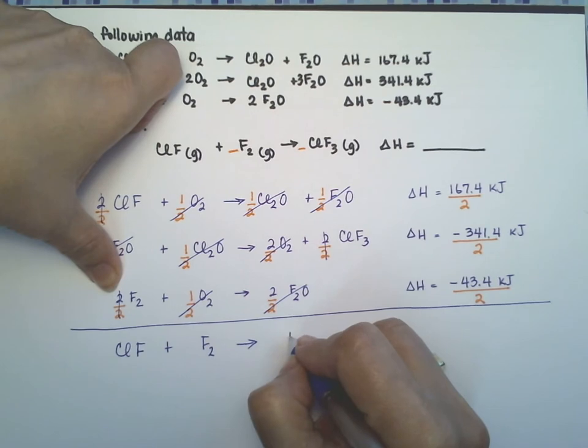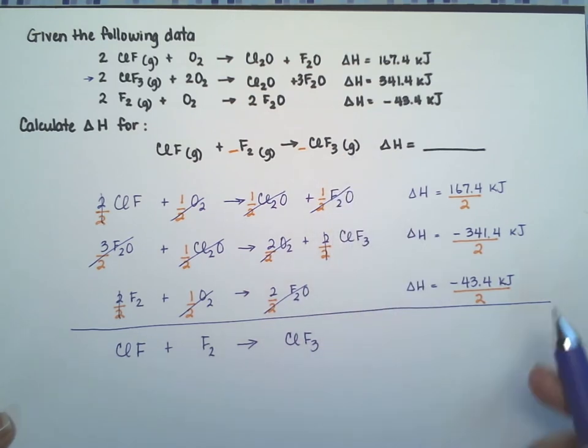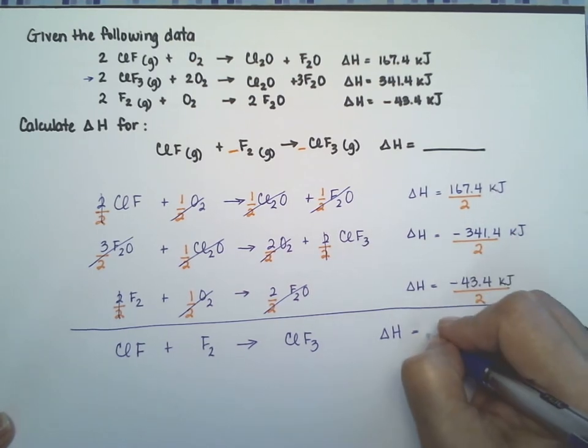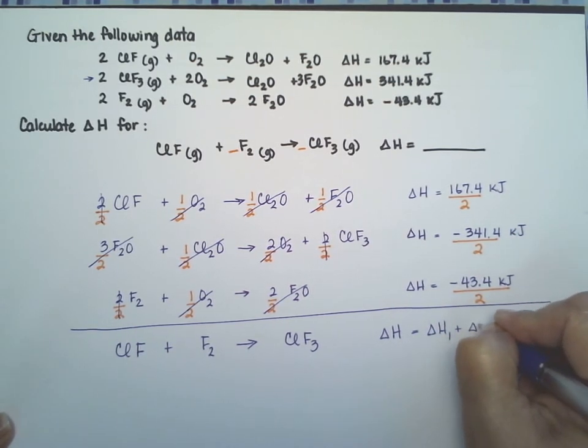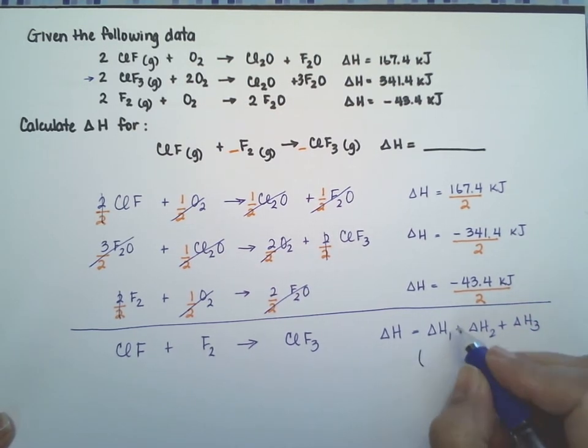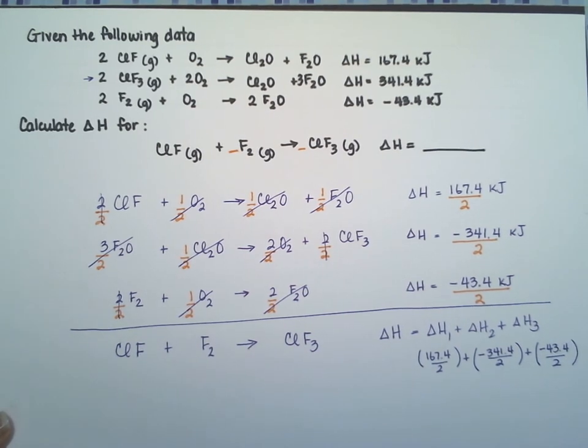All right, so I have one CLF and one fluorine molecule forming CLF3. That's the exact equation they gave us. So the Delta H for this reaction is the addition of these three numbers: Delta H1 plus Delta H2 plus Delta H3. That is 167.4 divided by two minus 341.4 divided by two minus 43.4 divided by two.